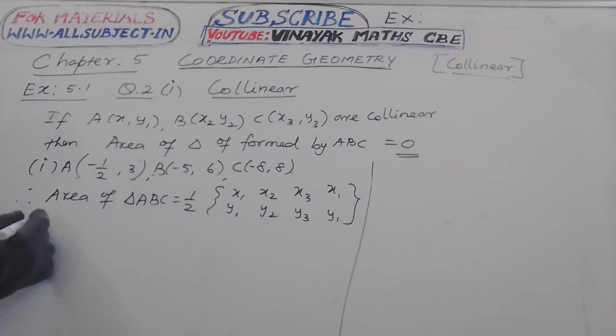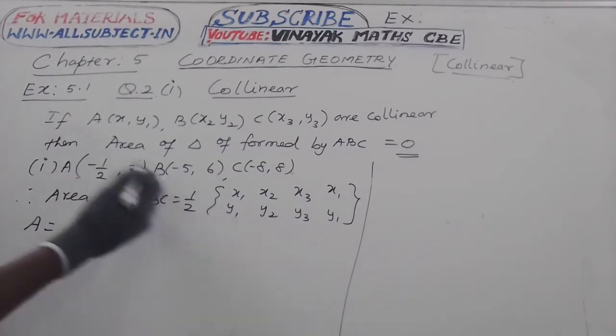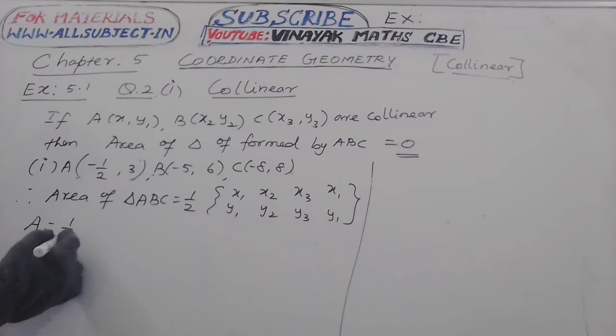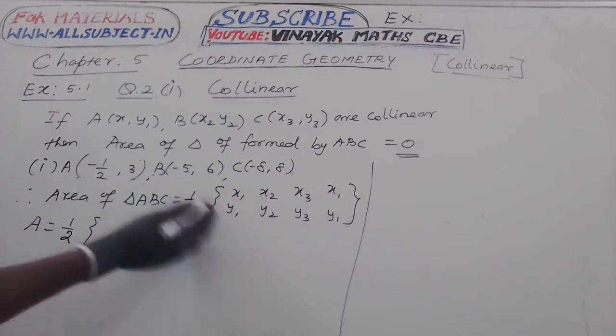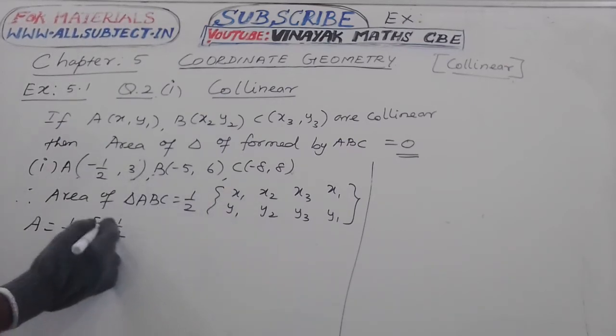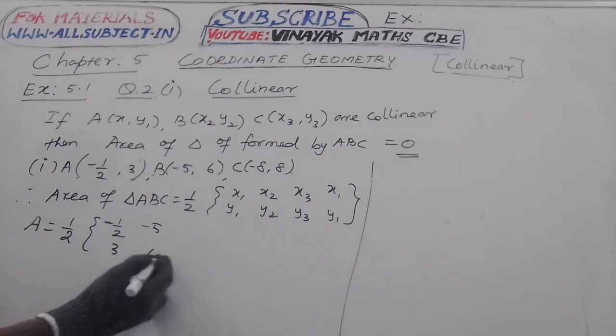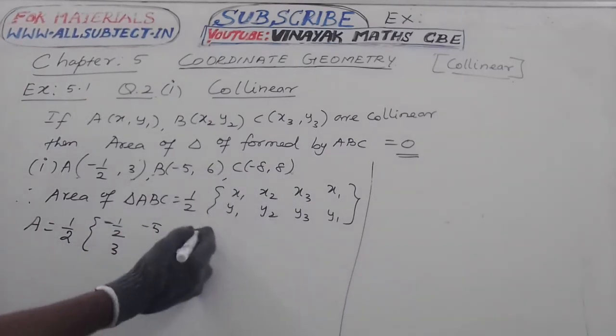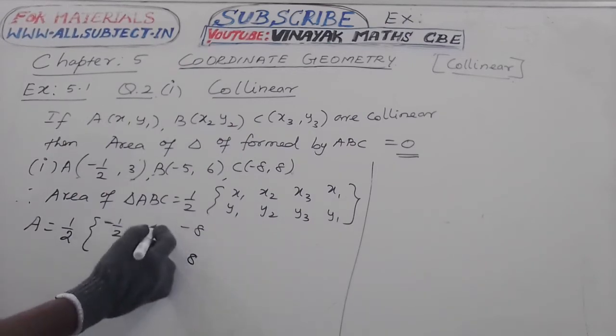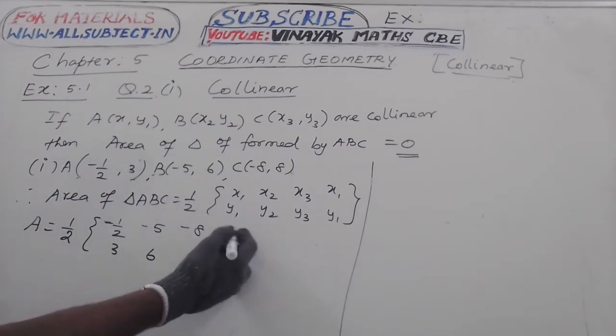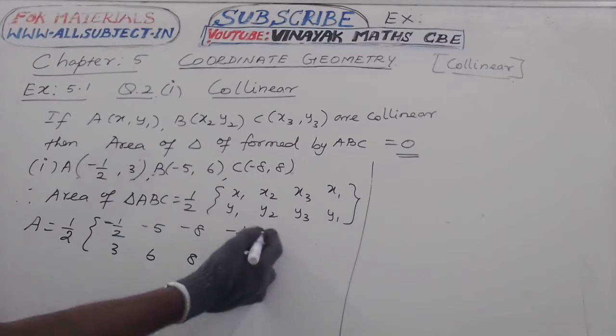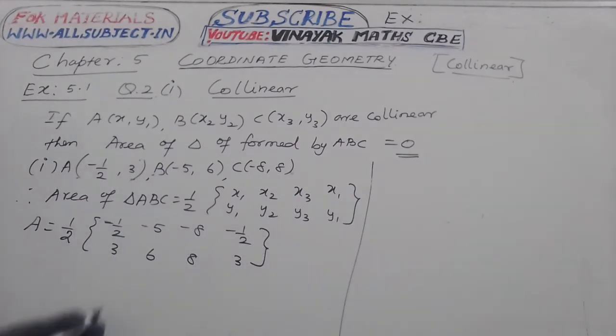Area of triangle A equals the formula: 1/2 into x1y1 (-1/2, 3), x2y2 (-5, 6), x3y3 (-8, +8), then again x1y1 (-1/2, 3). Now first,